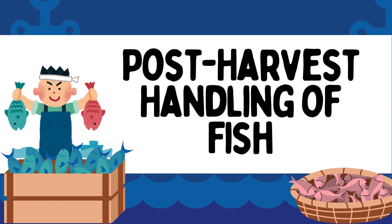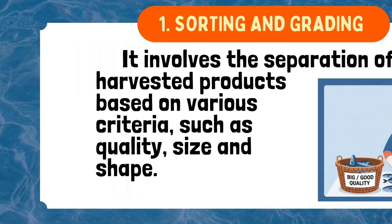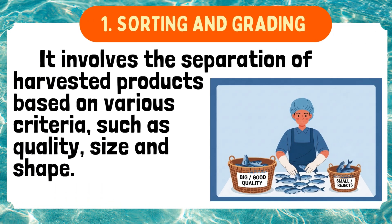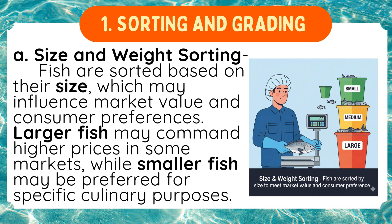Post-harvest handling of fish. 1. Sorting and grading involves the separation of harvested products based on various criteria, such as quality, size, and shape. A. Size and weight: Fish are sorted based on their size, which may influence market value and consumer preferences. Larger fish may command higher prices in some markets, while smaller fish may be preferred for specific culinary purposes.